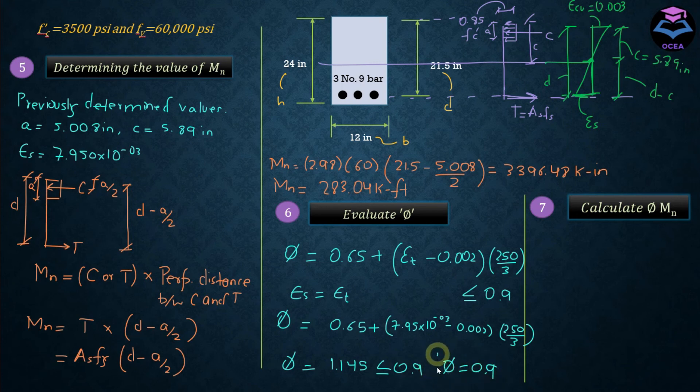And the last step is to calculate the design moment strength or the resistance provided by the cross-section. We just have to multiply MN with phi. That's it. Phi MN is equal to 283.04 multiplied by 0.9, and phi MN from here is equal to 254.736 kip-feet.